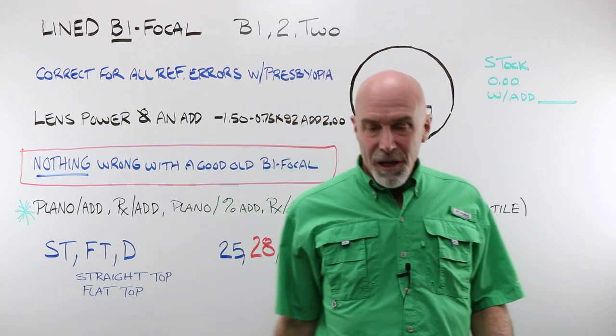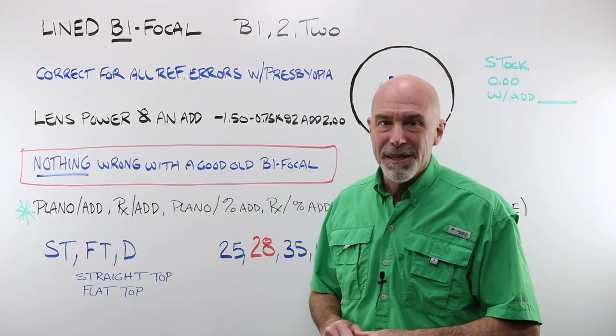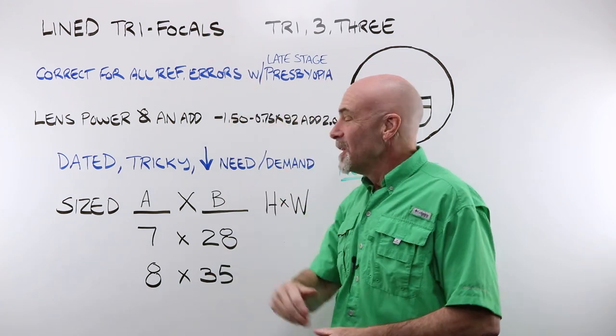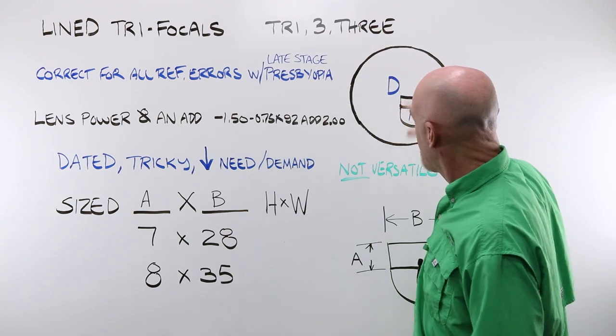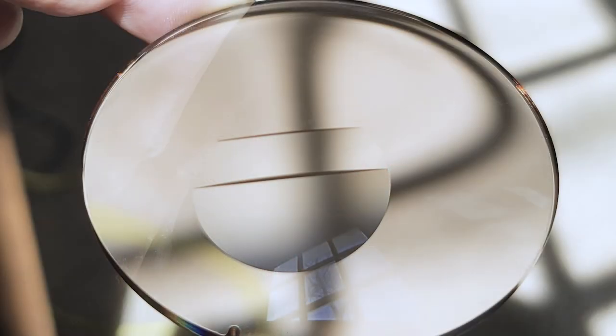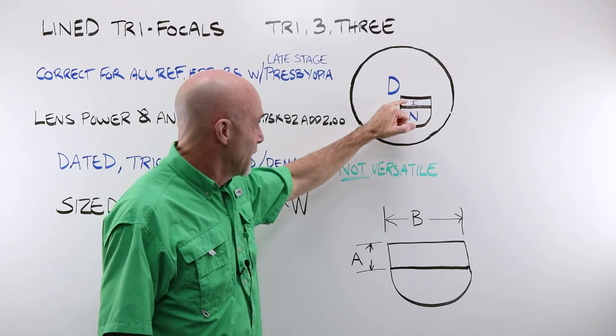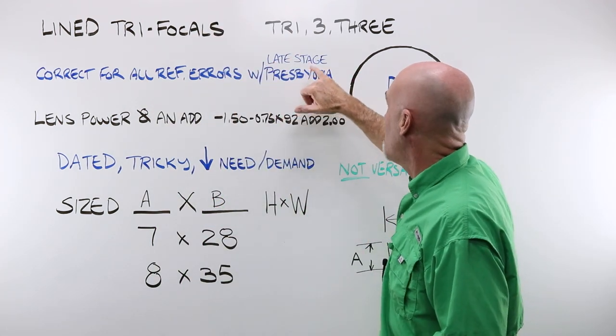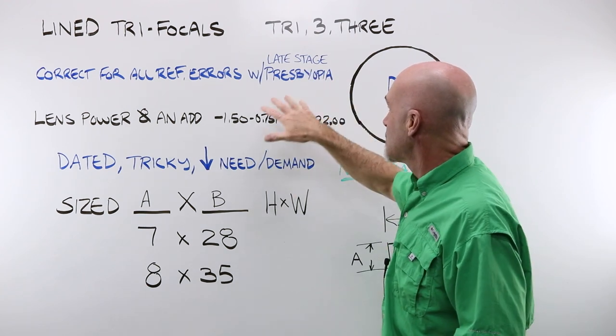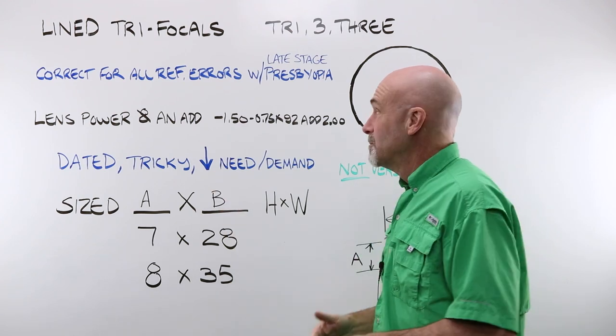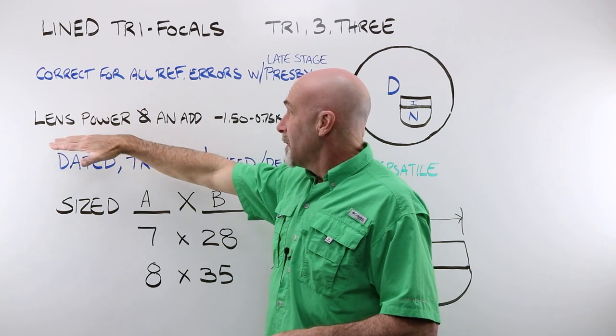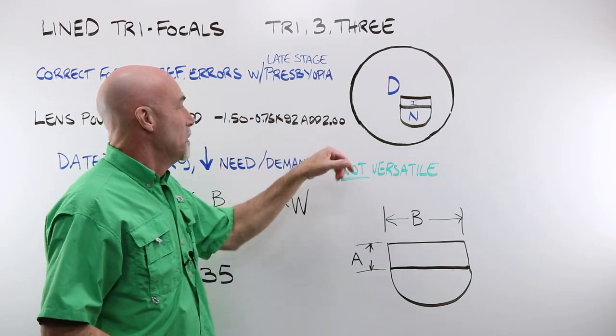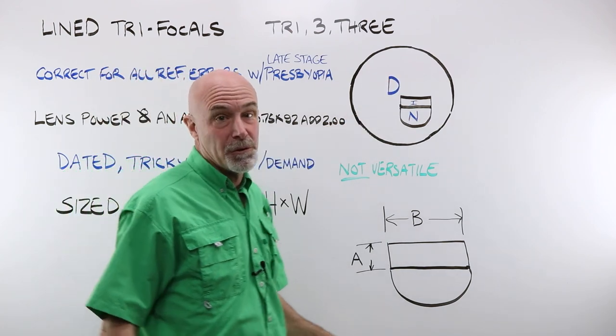Let's take a look at lined trifocals, which are pretty hard to come by these days. We've got one, we've got two, we've got three. Lined trifocals. Tri, three, distinct areas of clear vision. In this case, it's kind of alright to think of distance, intermediate, and near. They correct for all of the refractive errors and what we will call later stage presbyopia, when you have that desperate need for your full add power and an intermediate zone. Any lens order, any lens power is going to be that plus an add. Minus 150, minus 75, at 92, with an add of two. No add, no need for a bifocal or a trifocal.